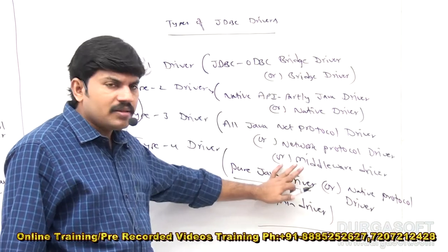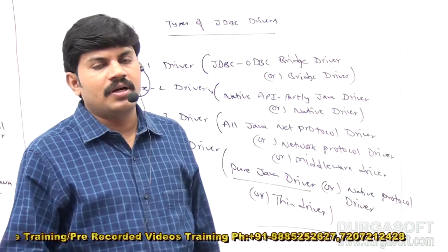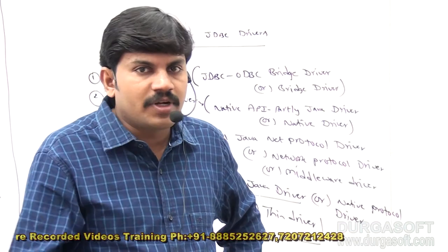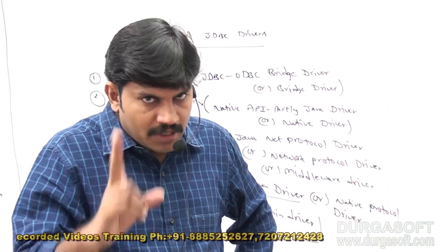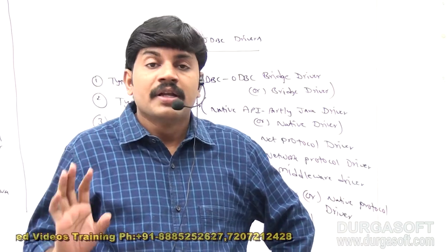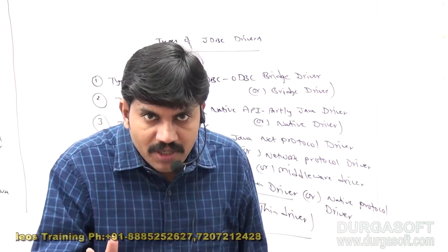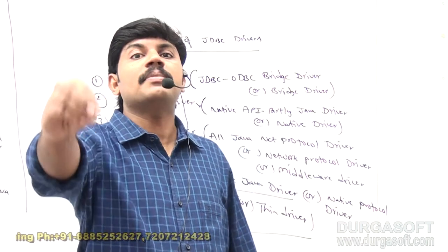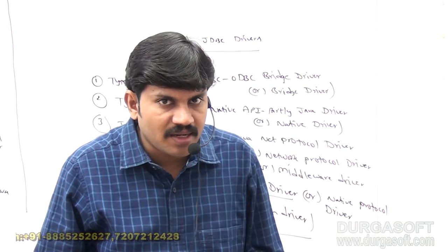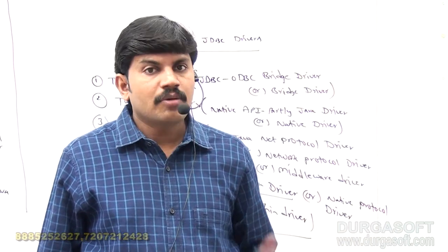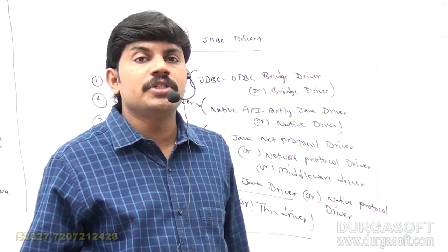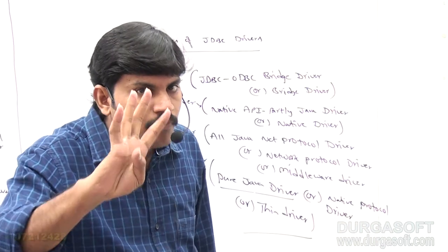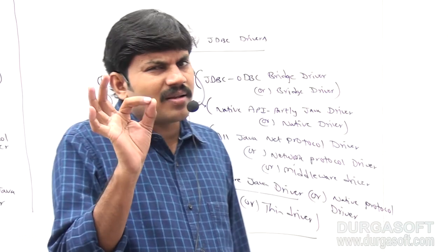To summarize: there are four types of JDBC drivers — Type 1, Type 2, Type 3, and Type 4. The purpose of driver software is to convert Java calls into database-specific calls and database-specific calls into Java calls. In any interview, if asked how many types of JDBC drivers are available, immediately answer: four types.